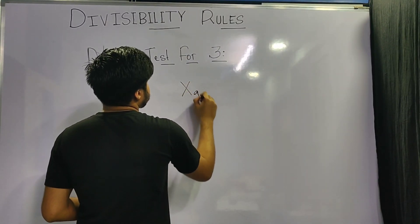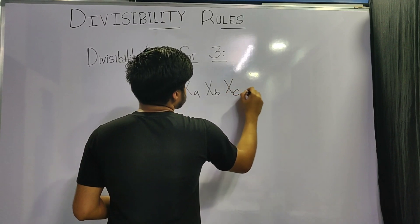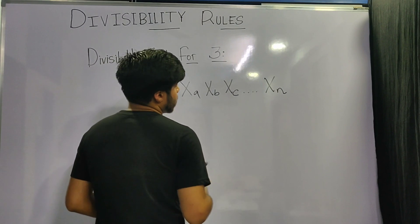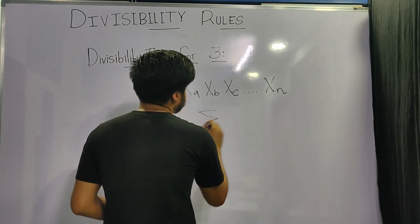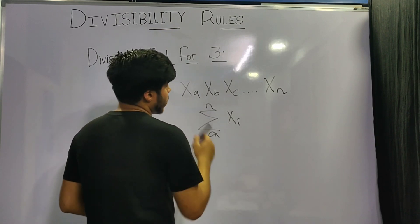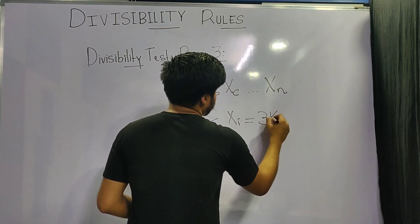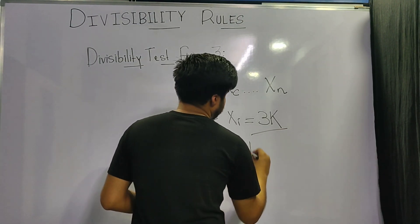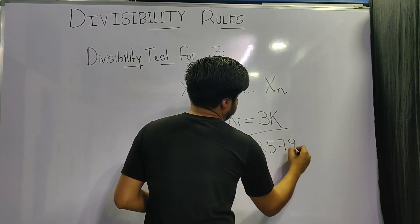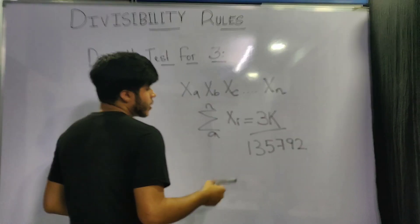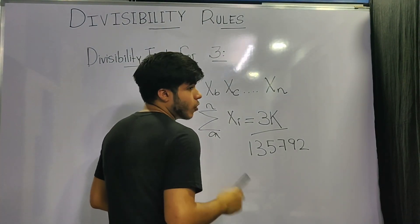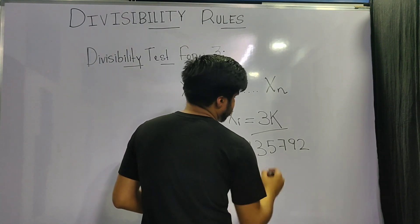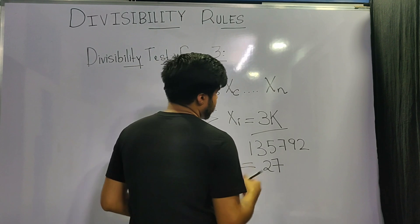Moving ahead with the number 3 — let's say your number is of the form XA, XB, XC to XN. To check whether this number is divisible by 3, we find the sum of its digits from A to N. If that sum is a multiple of 3, then the number is divisible by 3. For example, 135792 has a digit sum of 27, which is a multiple of 3, so it is divisible by 3.